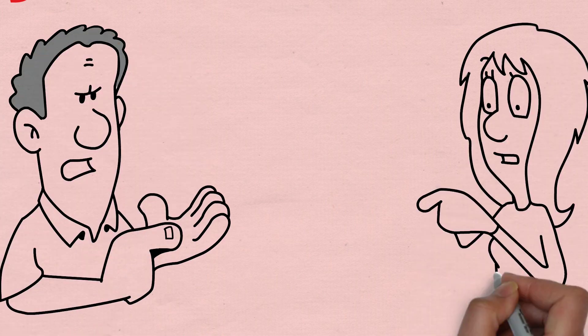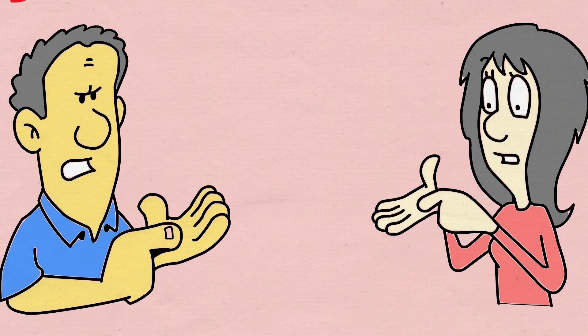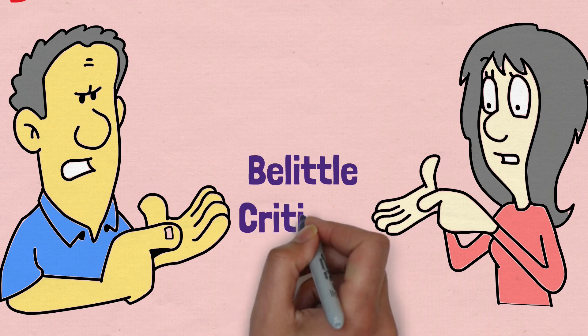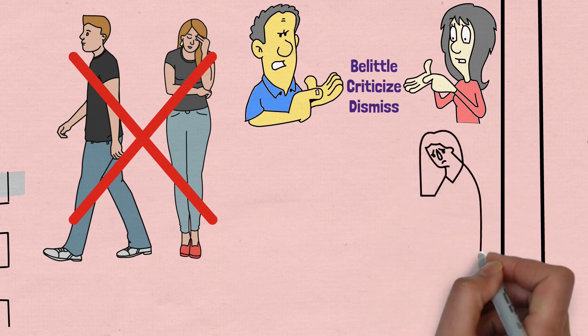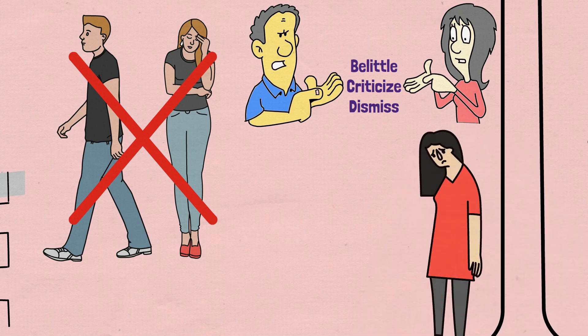When someone is emotionally abusive, they completely disregard the feelings of their partner. They may belittle, criticize, or dismiss their partner's emotions and experiences, and this lack of empathy can be extremely harmful to the victim.